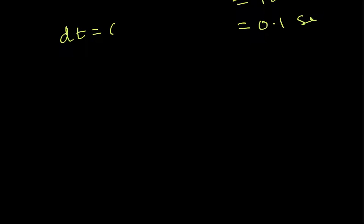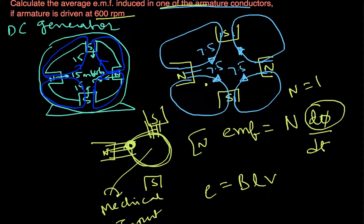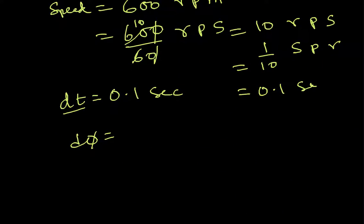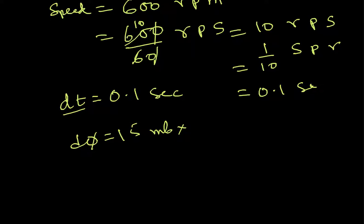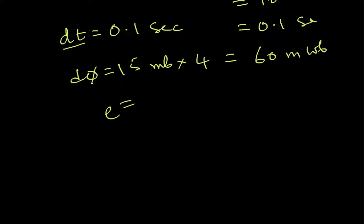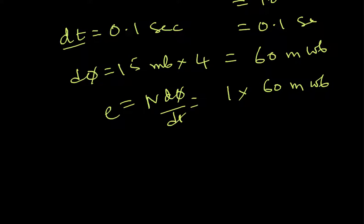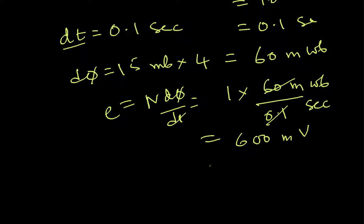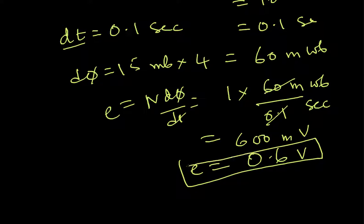So dt is 0.1 seconds — the time for one revolution. Now dΦ: in one revolution, the conductor meets all four poles, so the total flux change is 15 milliwebers multiplied by 4 poles, giving 60 milliwebers. Therefore EMF = N·dΦ/dt = 1 × 60 milliwebers / 0.1 seconds = 600 millivolts, or 0.6 volts.